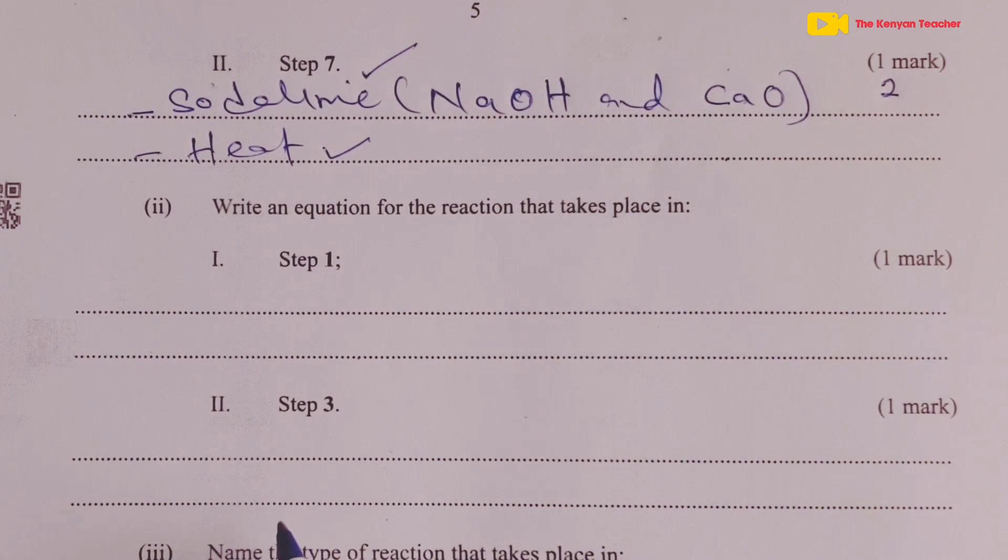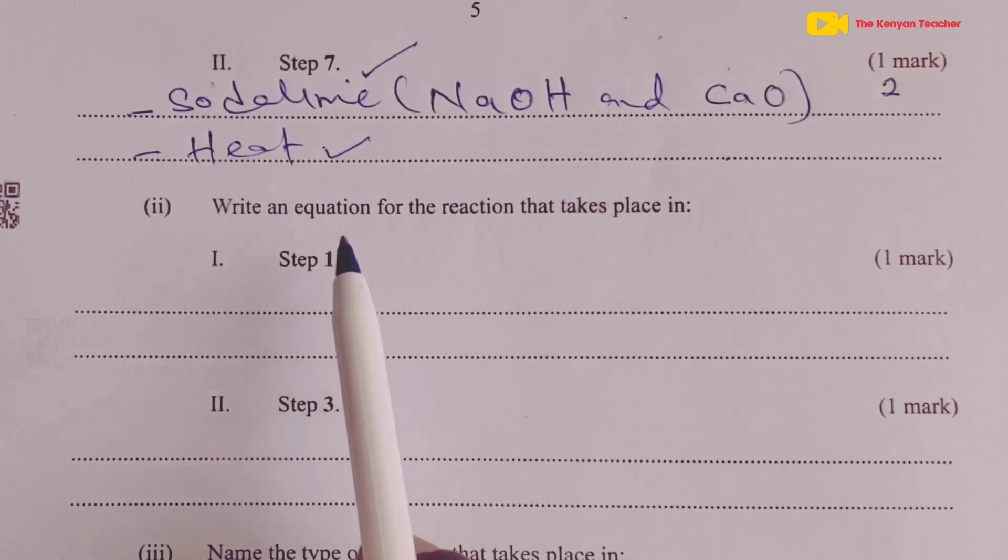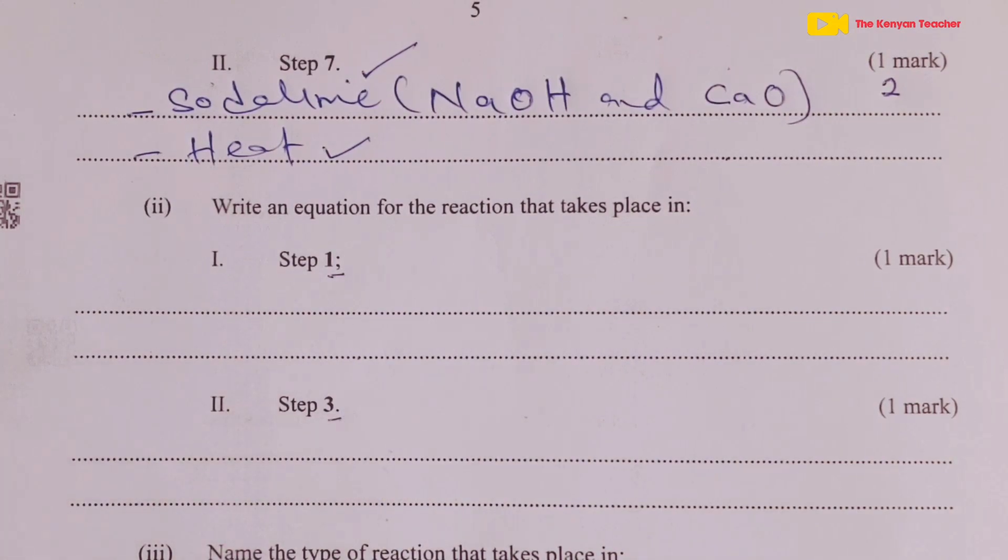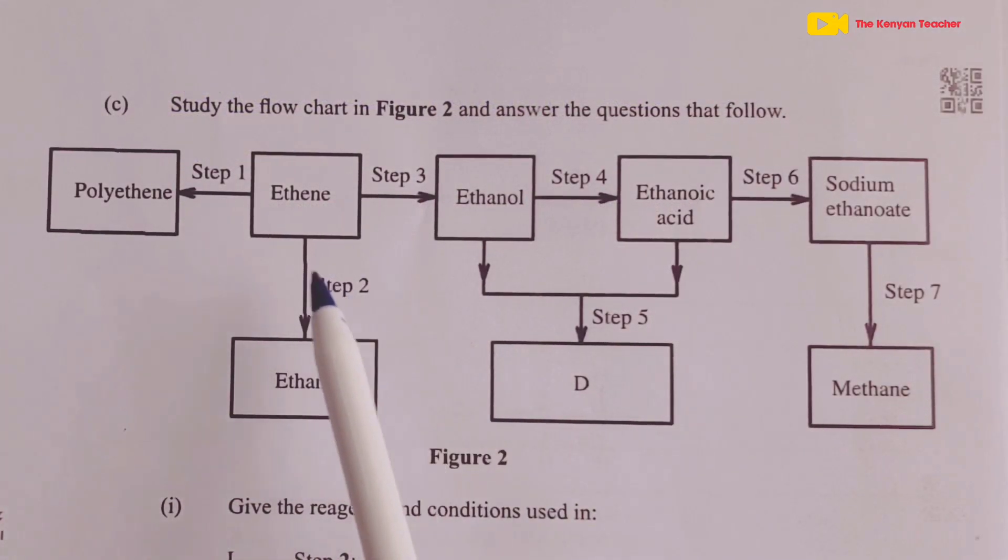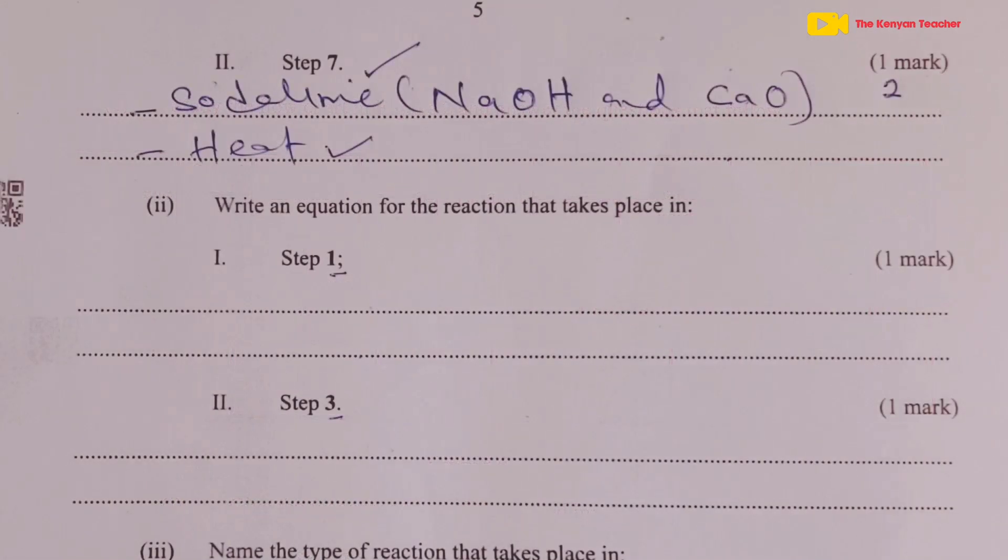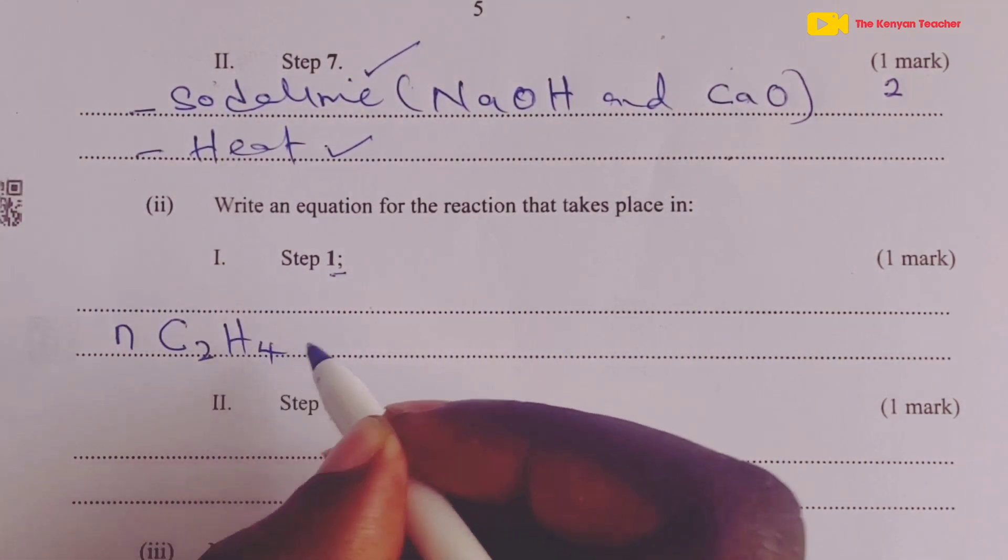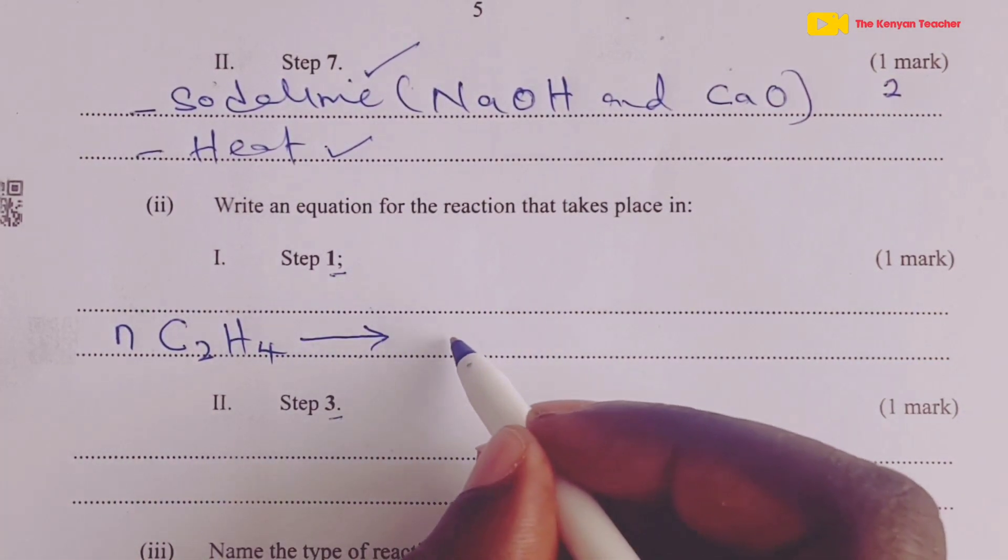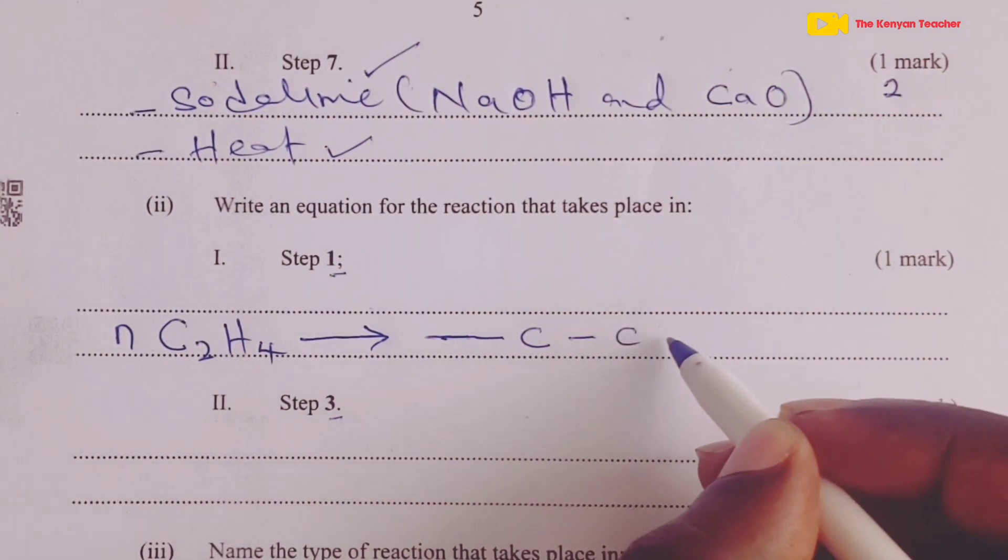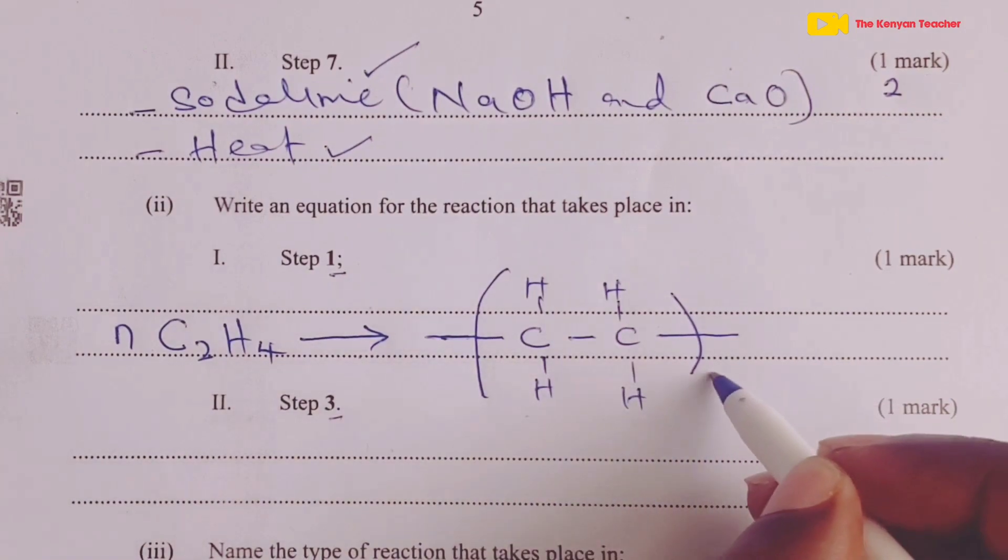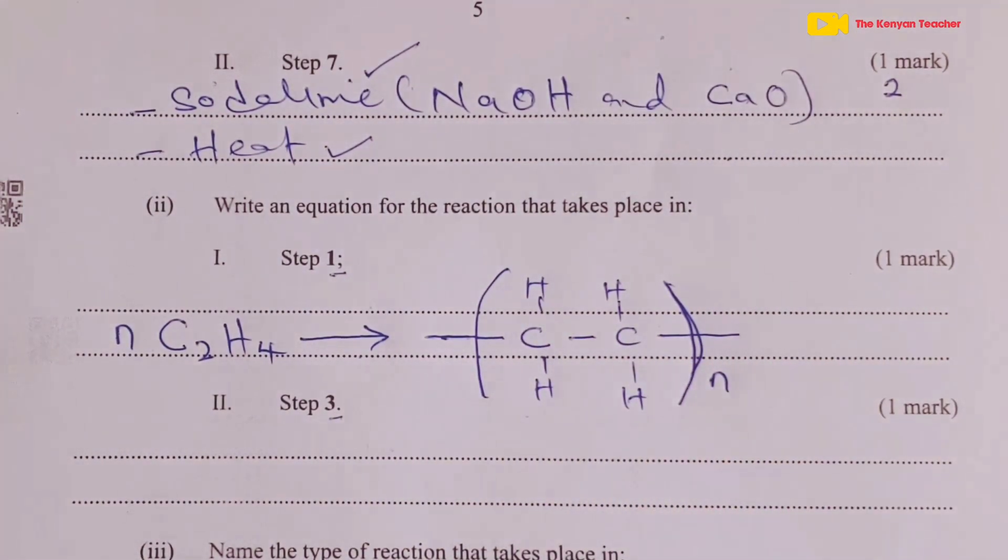Moving on to Roman 2 of part C, we were asked to write an equation for the reaction that takes place in step 1. Step 1 is where we are carrying out polymerization on ethene. The equation would be N molecules of our monomer ethene being undertaken through polymerization process to give a long-chain polymer that is called polyethene. The equation would be N outside the bracket. This would be worth 1 mark.